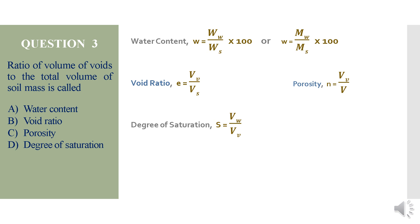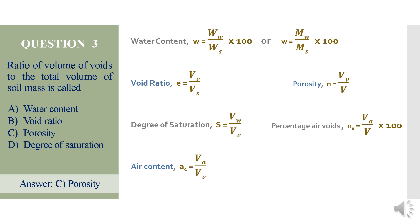For a perfectly dry soil mass, the volume of water is 0, so the ratio becomes 0 — degree of saturation S = 0. Percentage air voids is the ratio of volume of air voids to the total volume of the soil mass (Va/V), expressed as a percentage. Air content is the ratio of volume of air voids to the volume of voids (Va/Vv). Therefore, the answer to question 3 is option C: porosity.